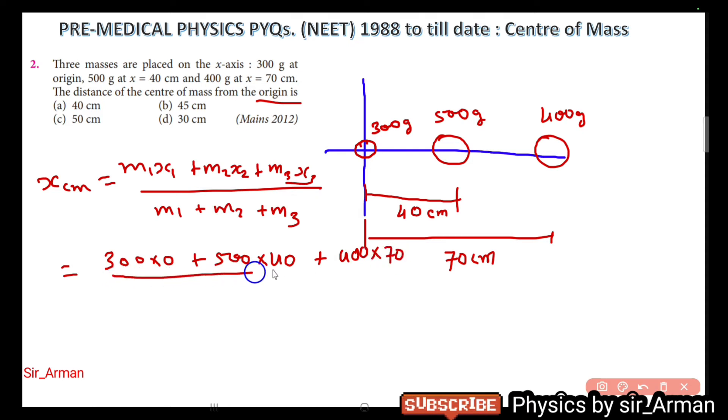And 400 grams, and what is x3? It is 70 centimeters from origin, or the point from where we have to find the center of mass. Now add all these three masses: it is 300 plus 500 equals 800, plus 400 equals 1200 grams.